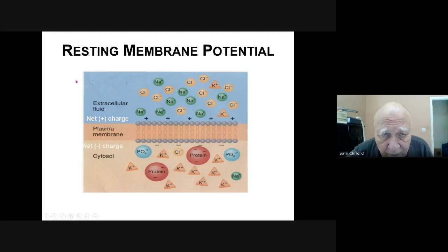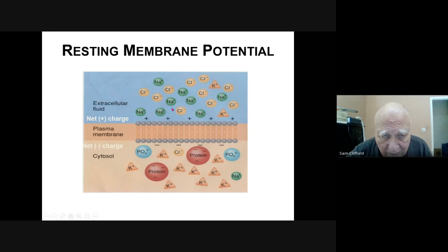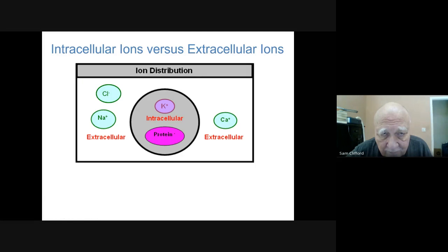To review: sodium is the predominant positively charged ion outside the cell, along with chloride. Potassium is on the inside, which makes the outside positive compared to the voltage inside. Sodium and chloride are on the outside of the cell; calcium can also be extracellular.